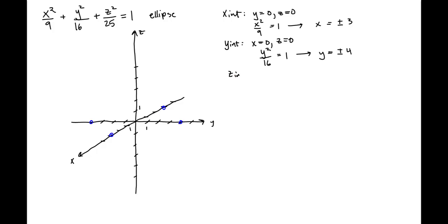For the z-intercept, it's more of the same, except this time, we'll set x equals to 0 and y equal to 0. This gives us the equation z squared over 25 is equal to 1. Solving for z, we get z is equal to plus or minus 5. So now we have the intercepts of what we are thinking is going to be an ellipse because of the nature of the quadric equation, the quadric surface.